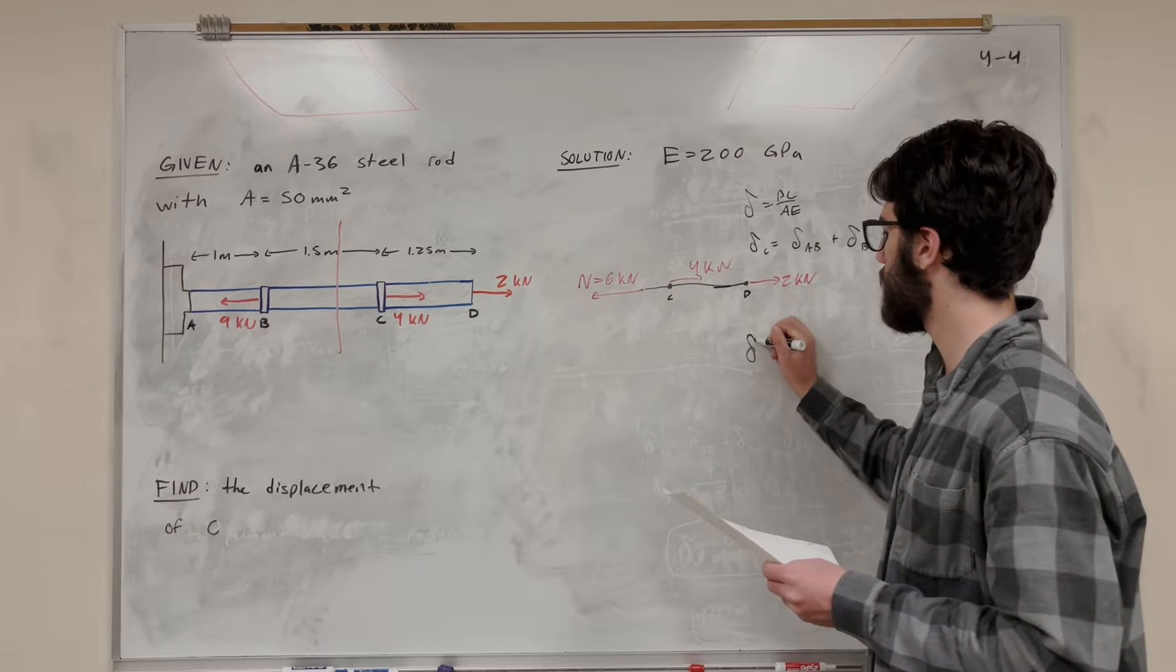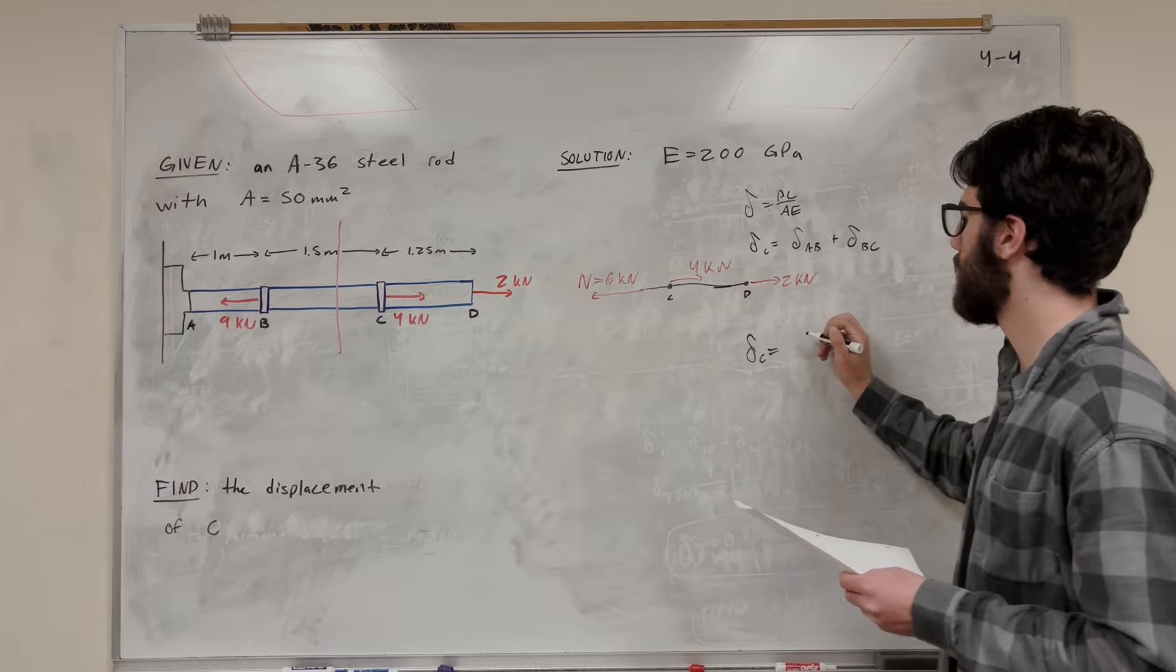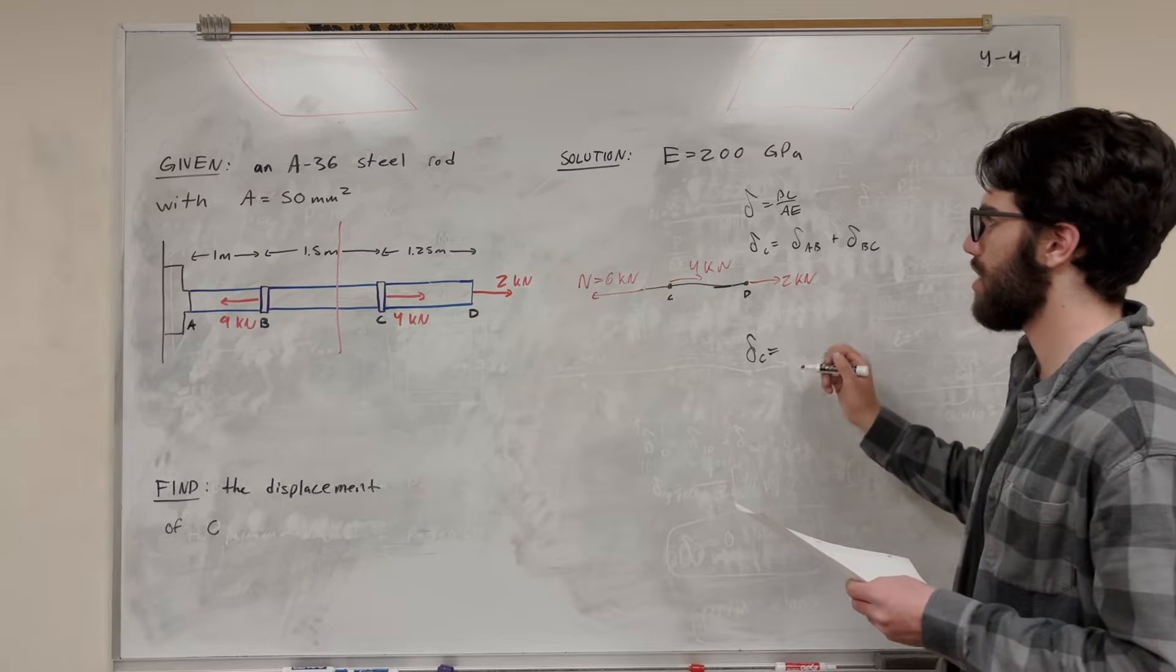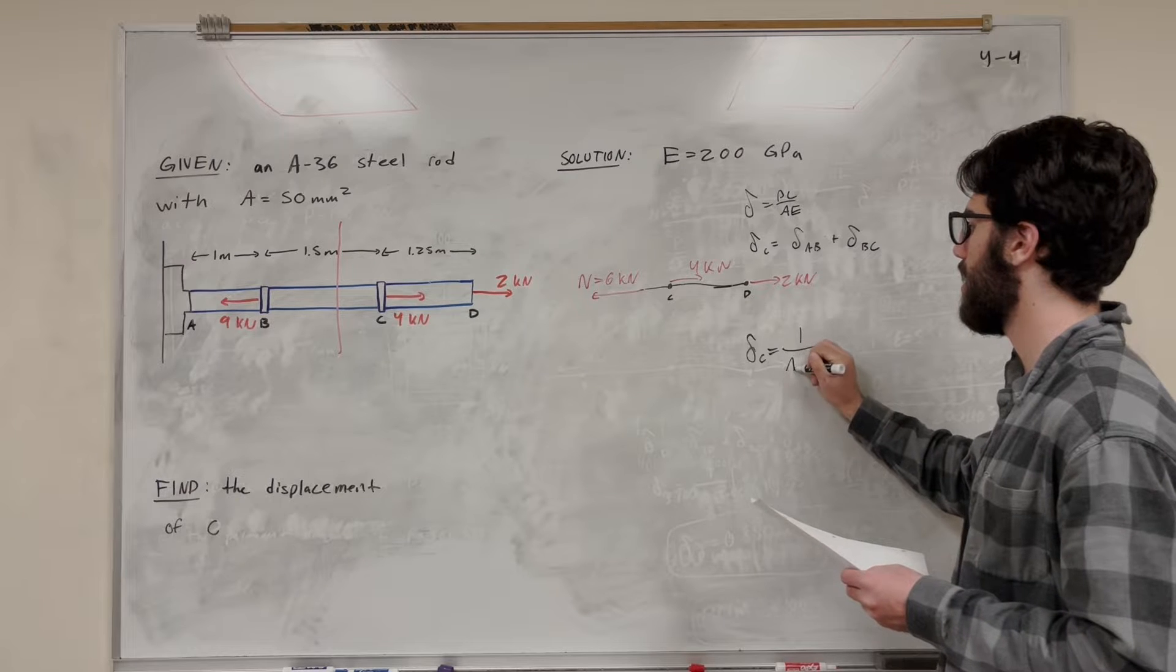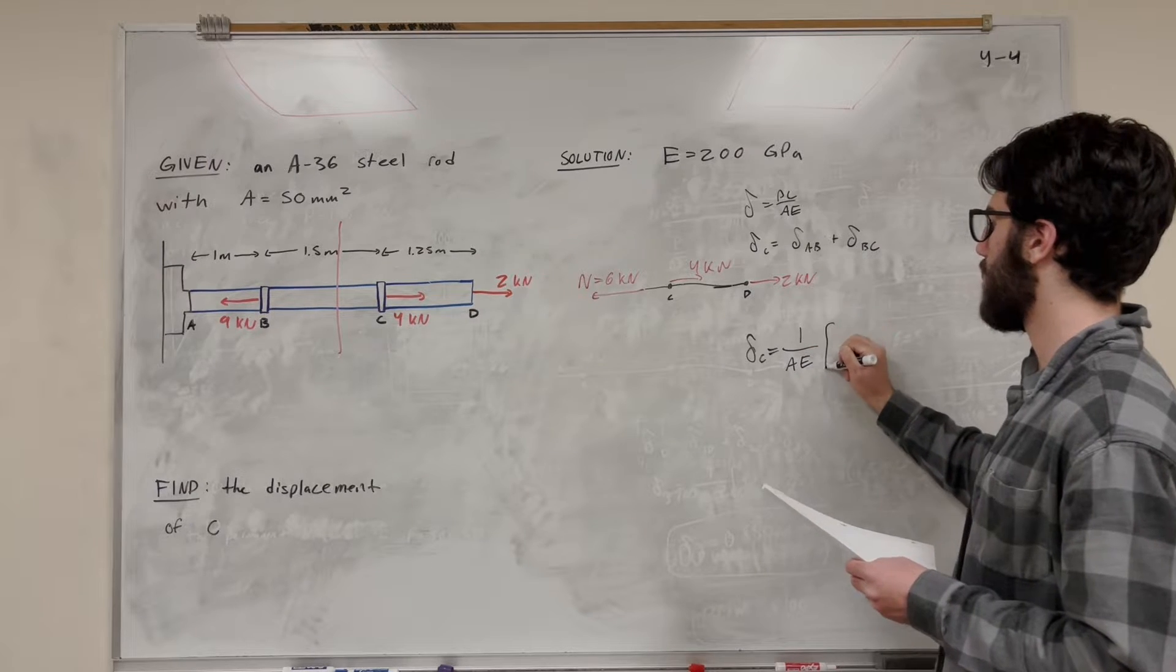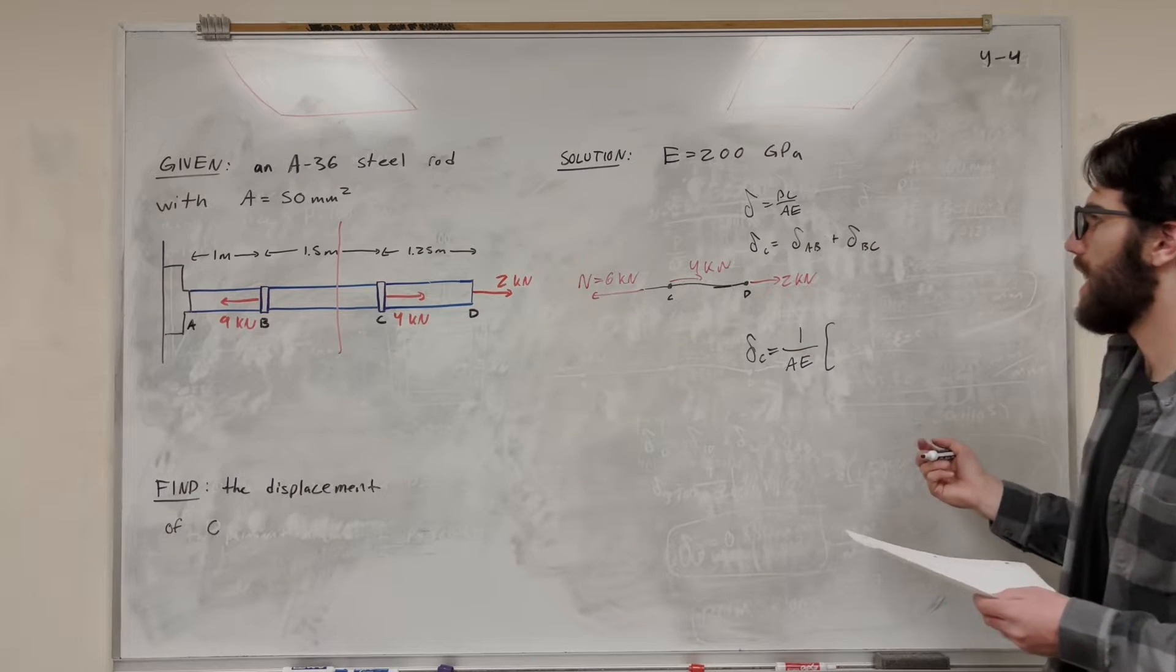So let's see. So displacement of C is equal to PL over AE. So both of these are going to have the area and E the same. So I'm going to factor out AE. Just going to make our math a little easier.